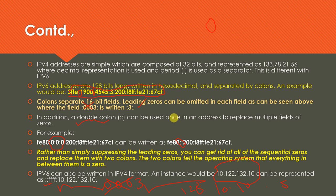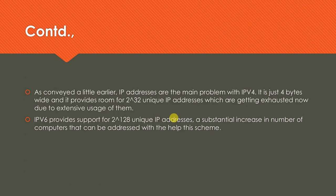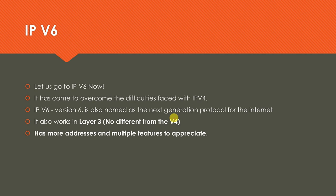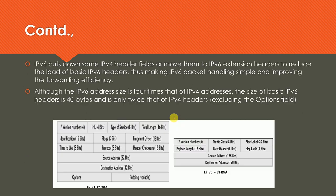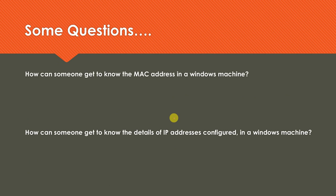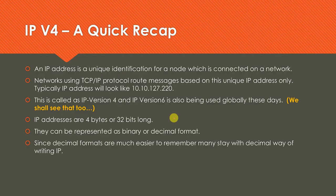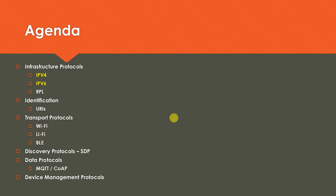That is sufficient to understand the differences between IPv6 and IPv4, and the header format of IPv6. We have already covered IPv4 in detail, so this should be enough to proceed further. We will come back with more protocol information useful for constructing IoT applications. The next session will be on RPL. Thank you very much for following the channel.